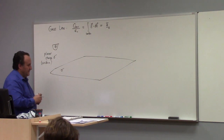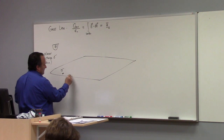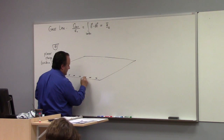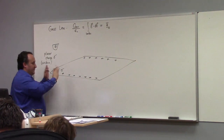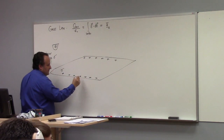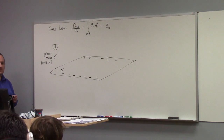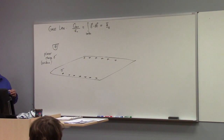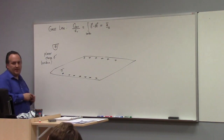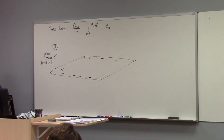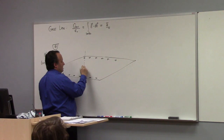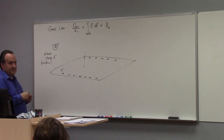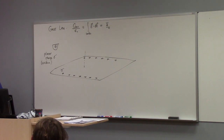If you think about all these positive charges — which way is the electric field going to go? It depends on whether we're above the plane or below the plane. If we're above the plane — and we'll just think about above the plane — then the electric field must point straight up.